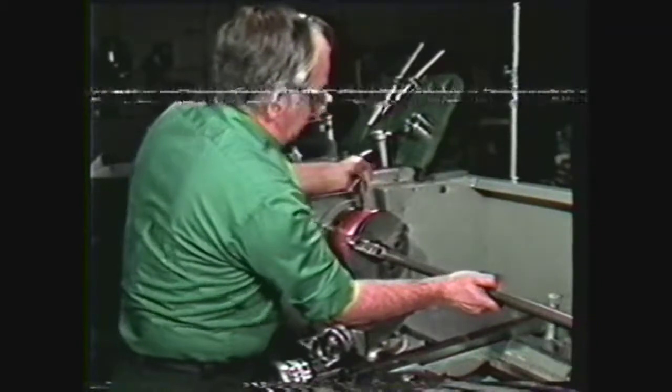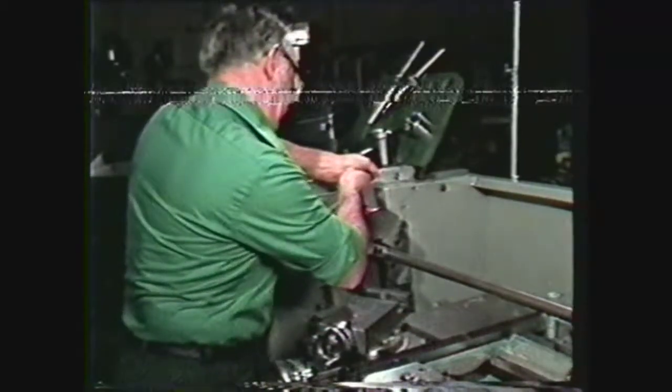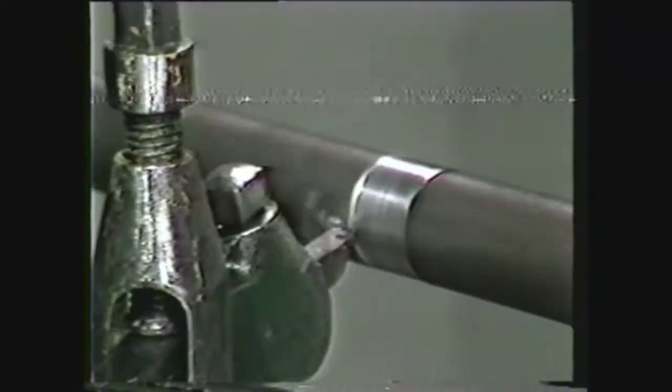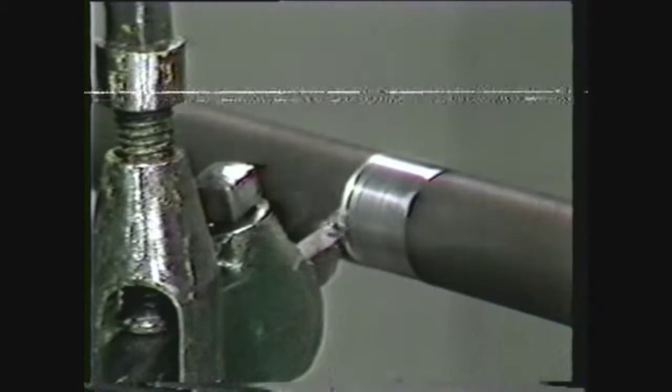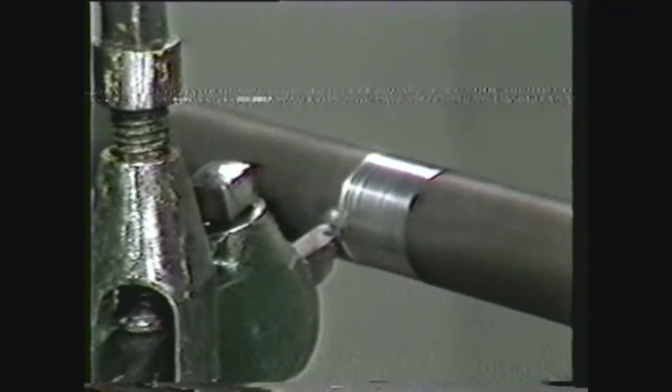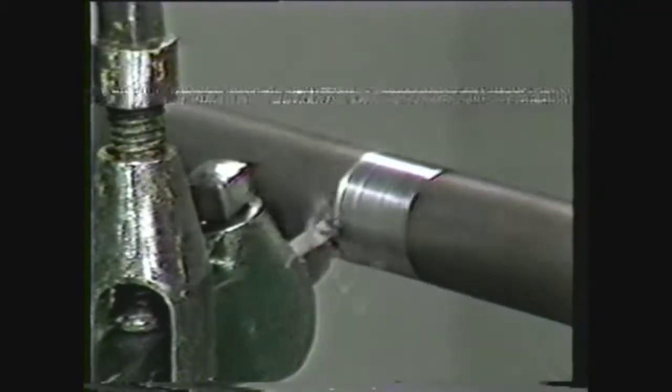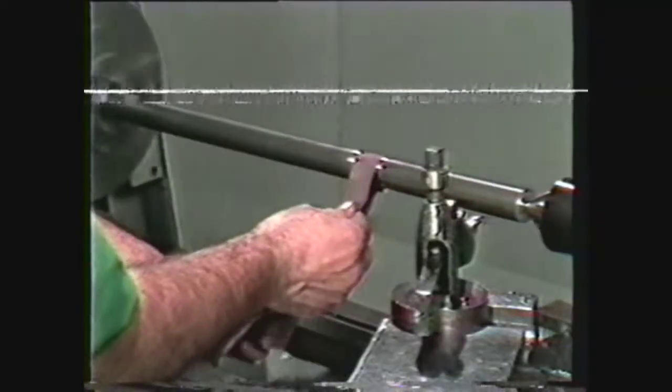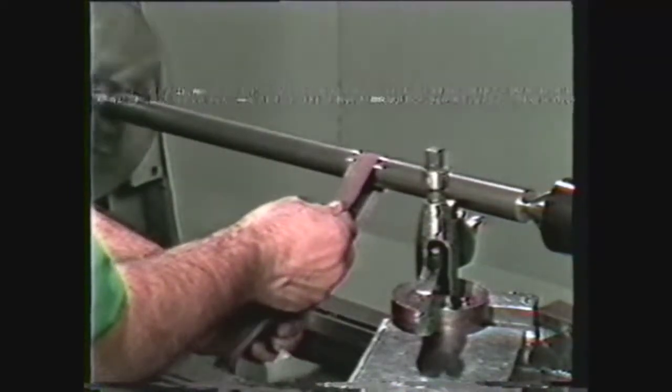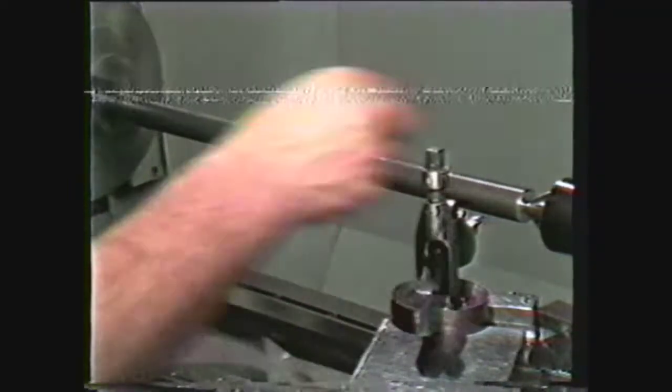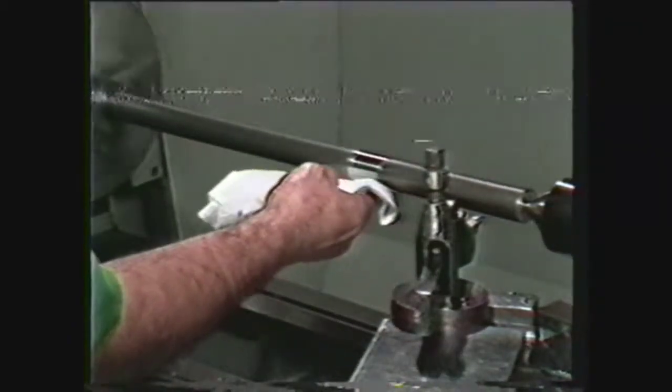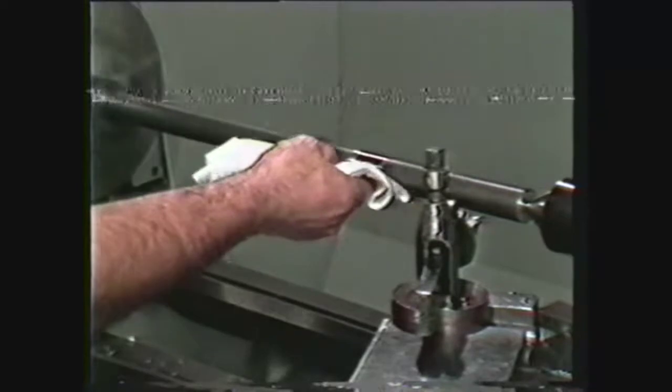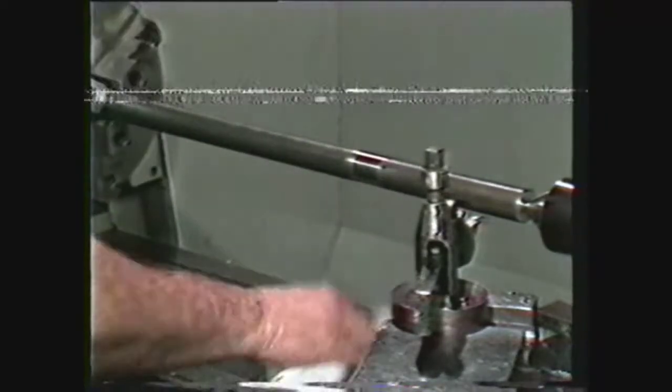To set up the steady rest, mount and true the work in a chuck or between centers. Turn a concentric bearing surface on the work at the point where the center rest jaws are to be applied. File and polish the bearing surface, then wipe the surface free of any abrasives.